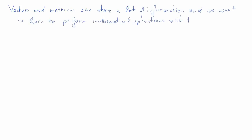So as vectors and matrices can store a lot of information we will now want to learn how to perform mathematical operations with them. In particular the vector operations which we're going to talk about in this clip: transposing, scaling, and length. These three operations act on one vector at a time.